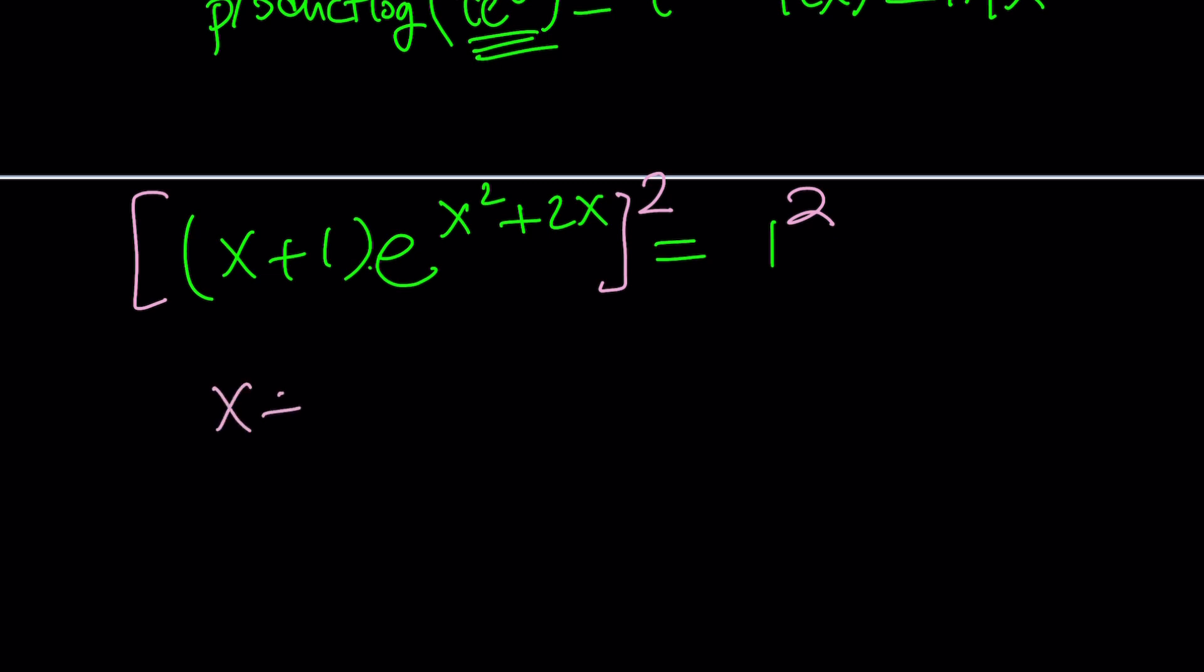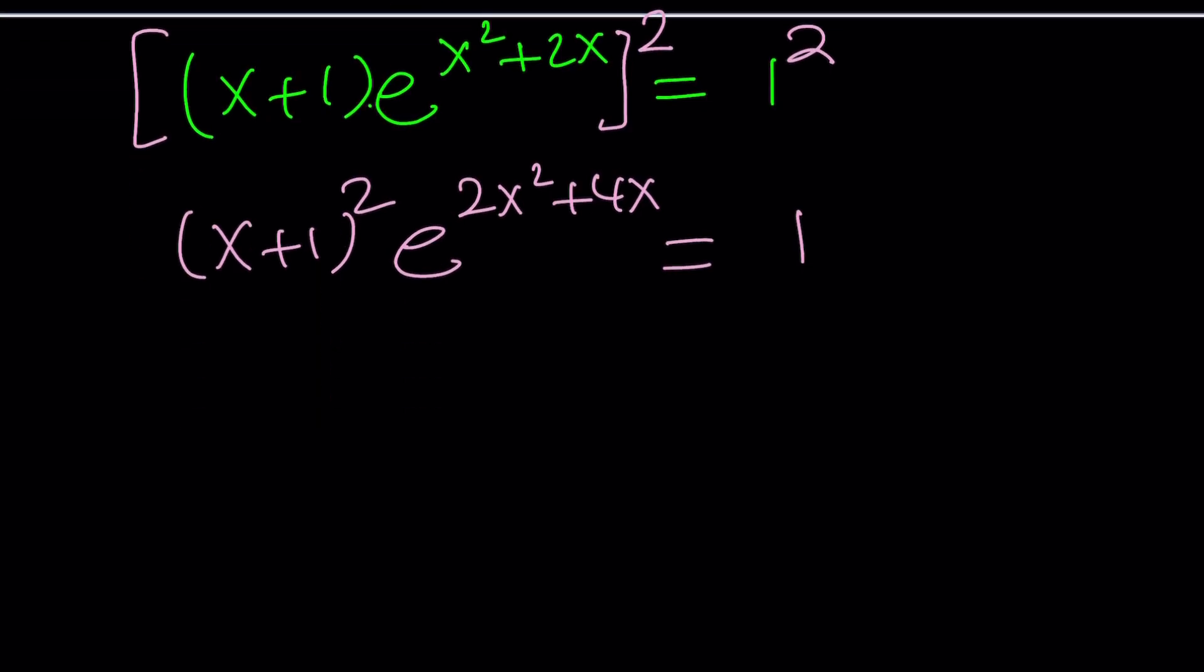After you square, what happens? This is a product so I can go ahead and write it separately. Of course when you square an exponential you're just going to double the exponent. That's what it means. And then 1 squared is still 1. That's the good thing about it. Now we're kind of getting closer to the result because if you expand x plus 1 squared you'll get x squared plus 2x plus 1, and that'll be multiplied by e to the power 2x squared plus 4x. Did I do anything new? No, not really. I just expanded x plus 1 squared. And why did I do that?